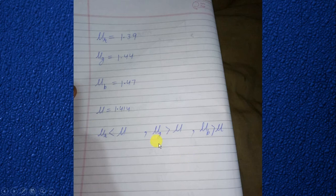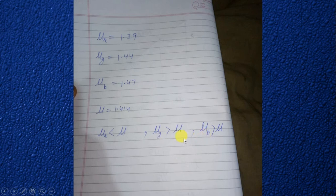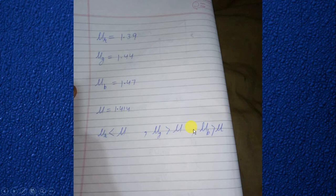Comparing the refractive index of green and blue wavelengths, we observe that both values (1.44 and 1.47) are greater than μ = 1.414. Therefore, the critical angles for green and blue wavelengths will be smaller than 45 degrees. These wavelengths fulfill the condition of TIR and will be totally internally reflected back by the surface AC.